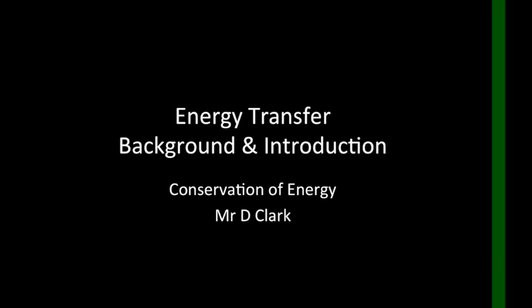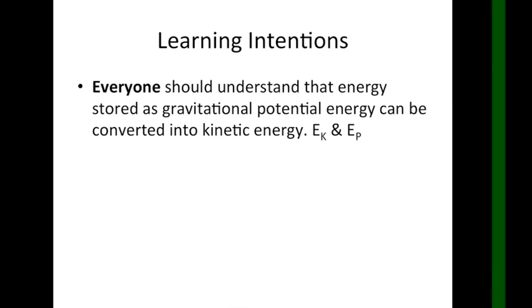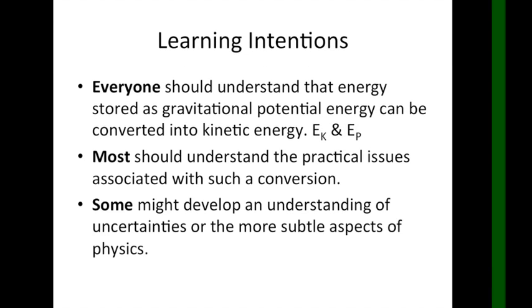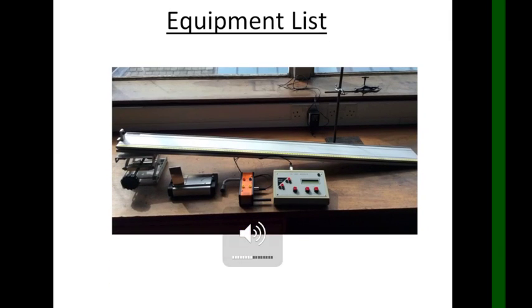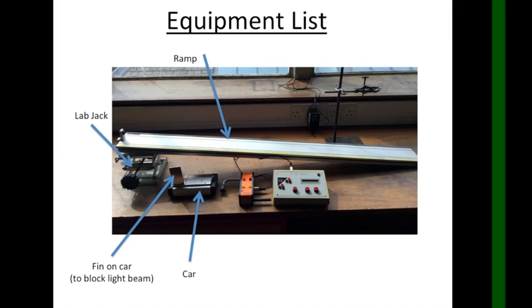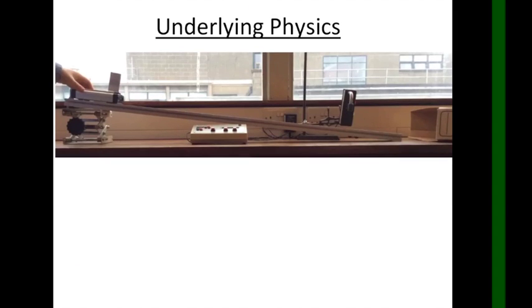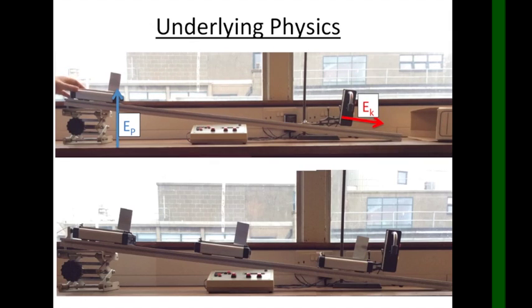The next thing we're going to take a look at is what happens when one type of energy is actually transformed into another. If we place a car at the top of a ramp, it will have a certain amount of gravitational potential energy. When the car is released, the potential energy will be converted into kinetic energy and the car will move down the ramp.